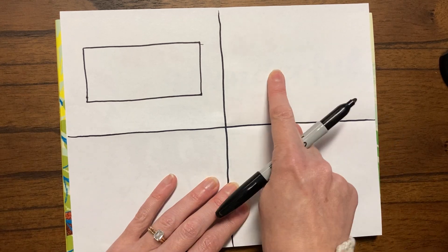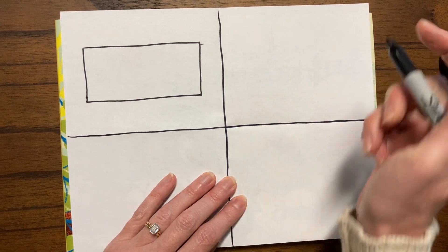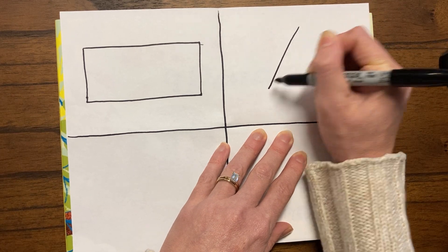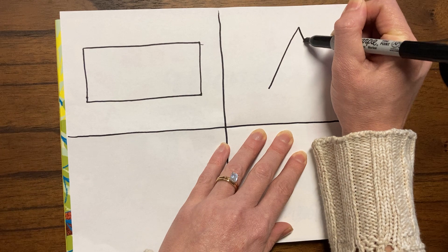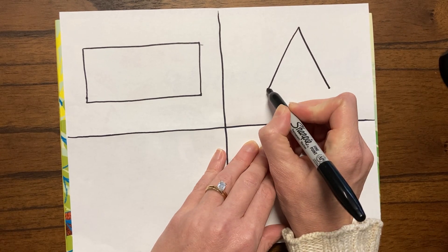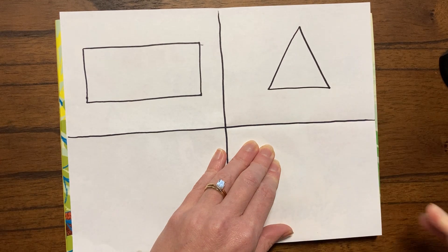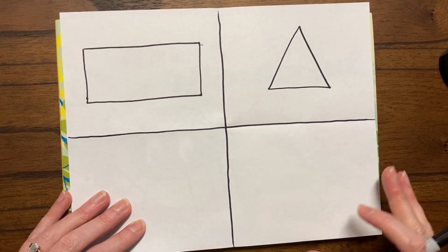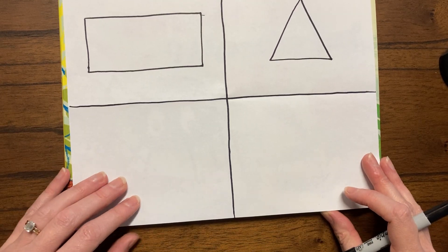So next door to that, let's go ahead and draw a triangle. How many sides does a triangle have? If you said three, you are correct. Rectangle, triangle.